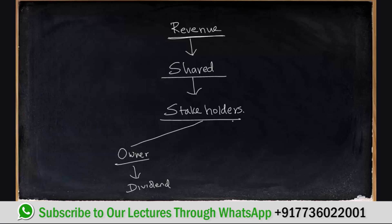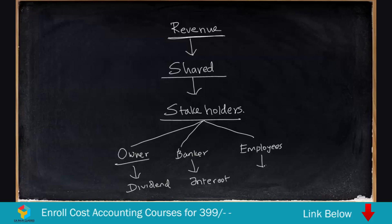The other stakeholders can be a banker who has given a loan to the business — they take their return in the form of interest. There are also stakeholders like employees, who take their return in the form of salaries and wages. Of course, there are creditors who charge extra fees for giving credit, or they take their profit from the product they are selling. So everyone takes their share of return when a business generates revenue.